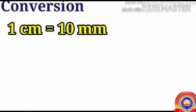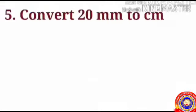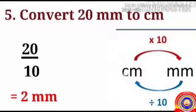Next, we will look at the conversion of centimeter to millimeter. We know one centimeter equals ten millimeters. To convert centimeter to millimeter, multiply by ten, and millimeter to centimeter, divide by ten. We have an example: convert twenty millimeters to centimeters. To convert millimeter to centimeter, divide by ten — twenty divided by ten equals two centimeters.